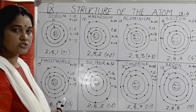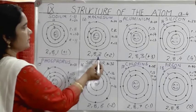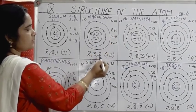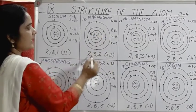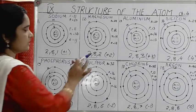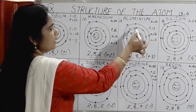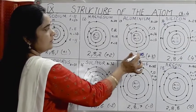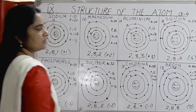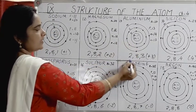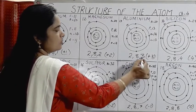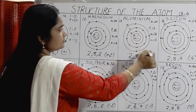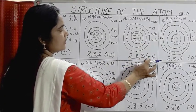Magnesium has atomic number 12, electronic configuration 2, 8, 2. It can lose 2 electrons to attain the stable configuration of neon (2, 8). Aluminium has atomic number 13, electronic configuration 2, 8, 3 — with 3 electrons in the M shell. It can lose 3 electrons to get configuration 2, 8 (stable). Valency of aluminium is +3.